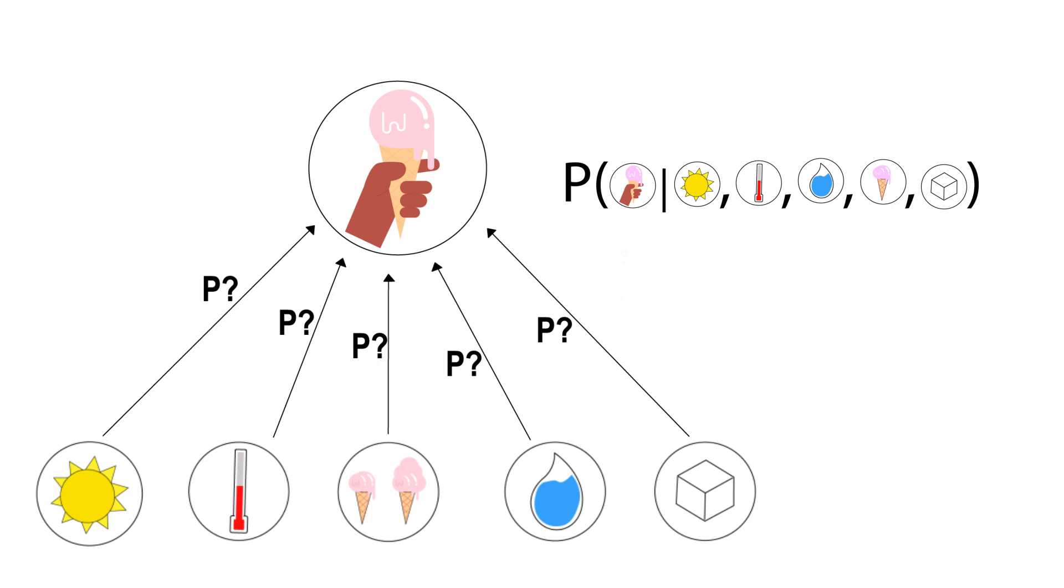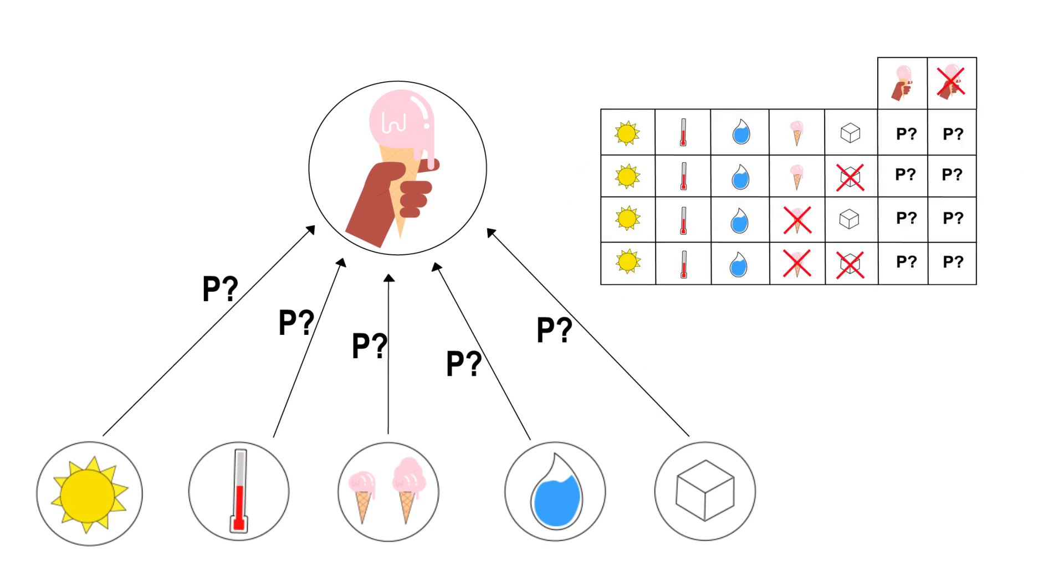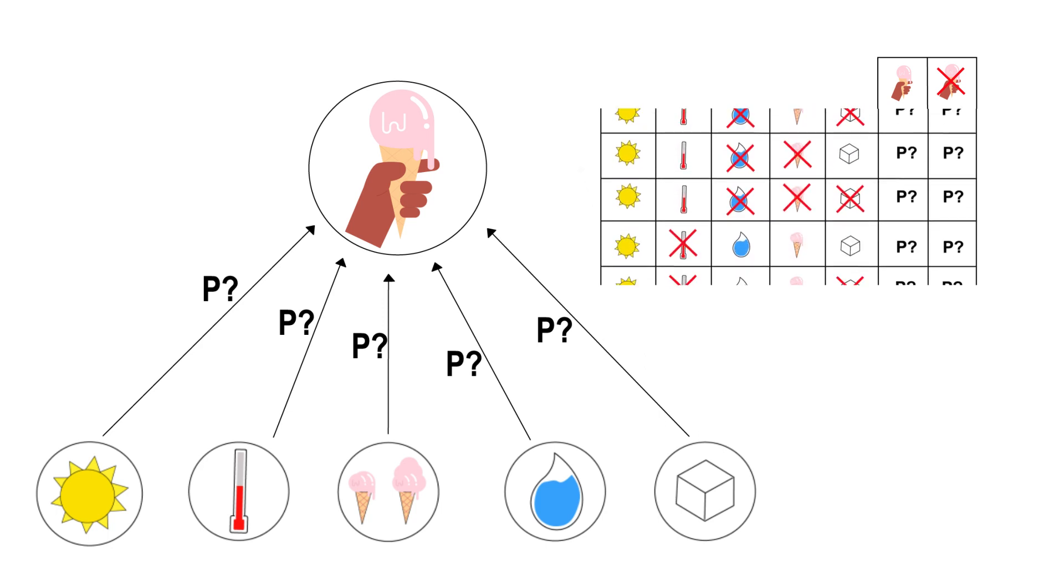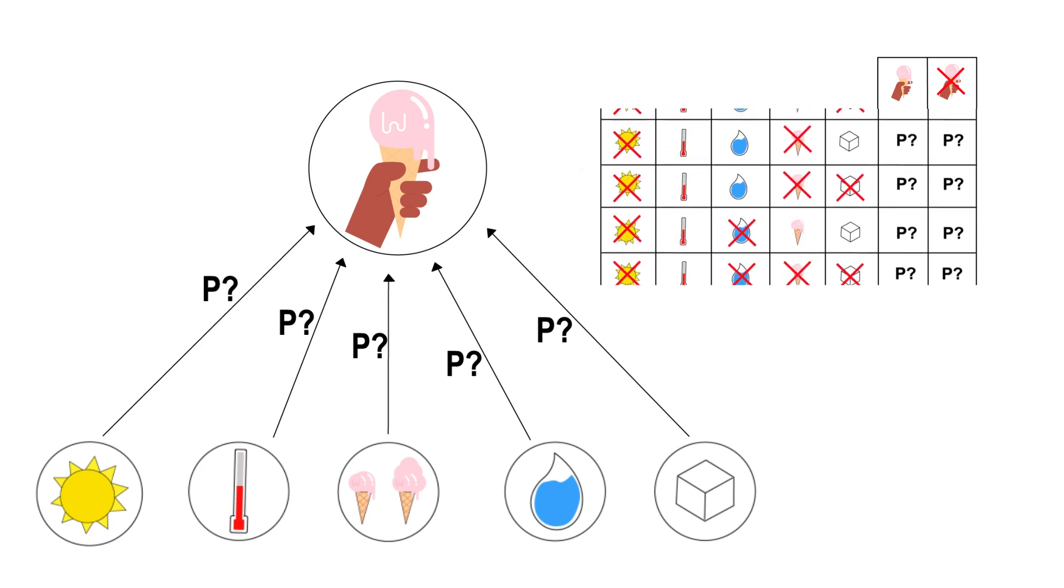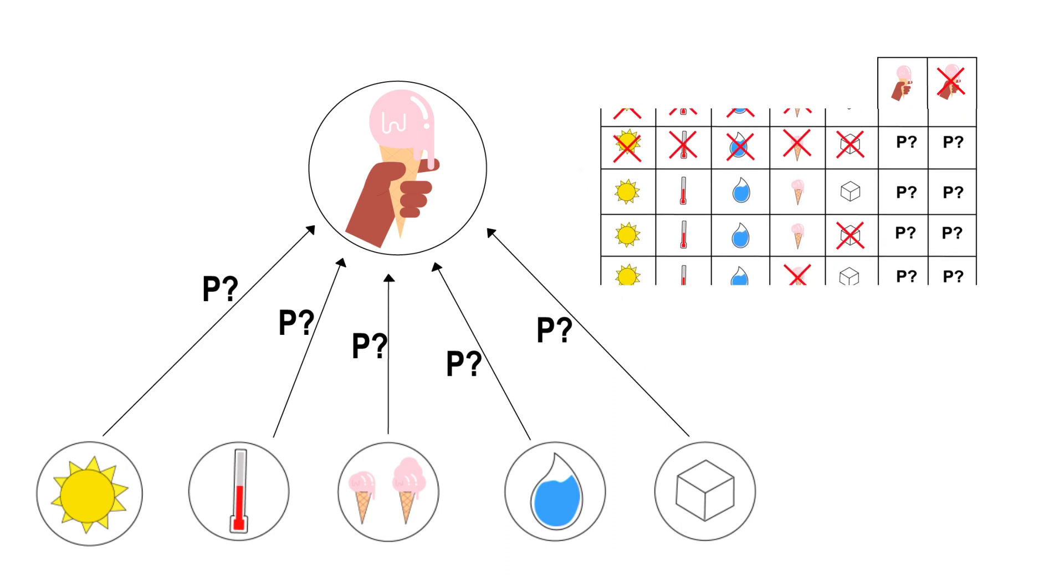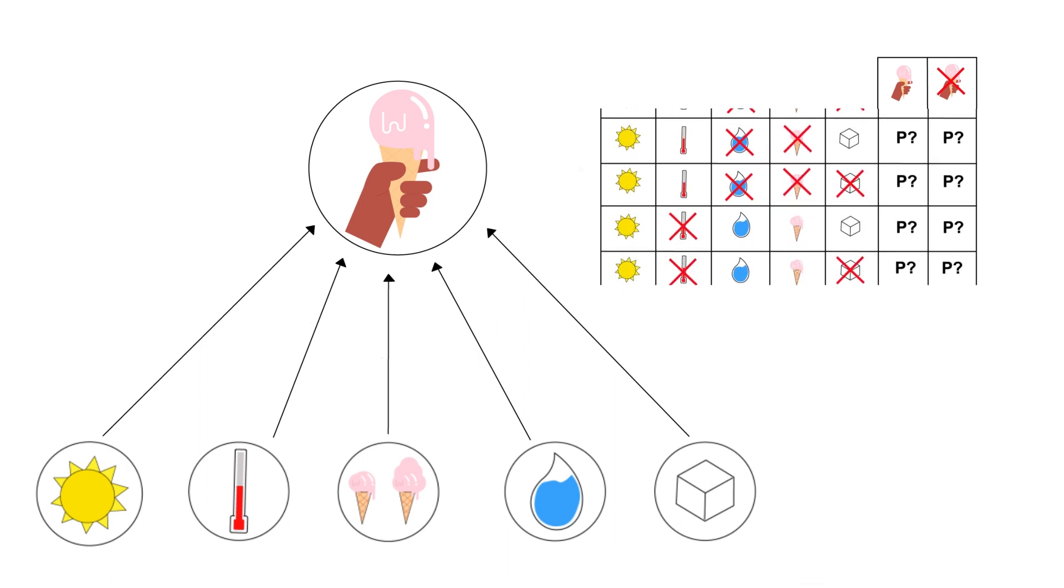What is missing is the conditional probability table. To obtain the conditional probability table, however, we need to estimate a lot of probabilities on different combinations of the given factors.